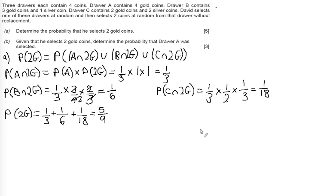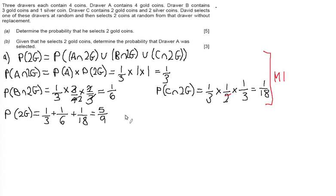For the mark scheme on Part A, you get a method mark and an accuracy mark for working out the individual probabilities for the three draws and picking two gold coins by multiplying the three probabilities. You also get an accuracy mark specifically for the final answer of five ninths.